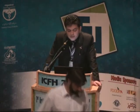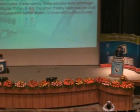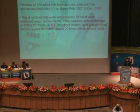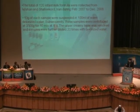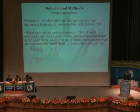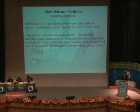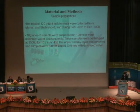Materials and Methods. Sample Preparations: A total of 120 infant milk formula samples were collected from Isfahan and Shahrekord, Iran, from February 2007 to December 2008. Ten grams of each sample were suspended in 100 milliliters of warm ionized water. Subsequently, samples were centrifuged at 3500 RPM for 10 minutes at 40 degrees centigrade. The upper layer was removed and samples were further diluted 20 times with ionized water.